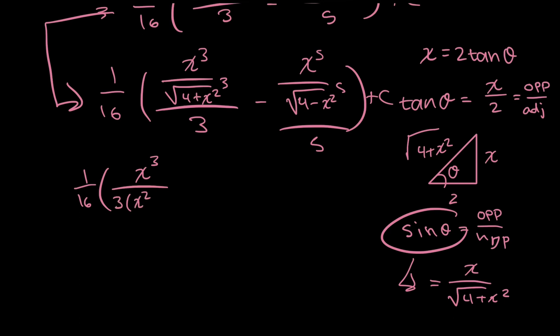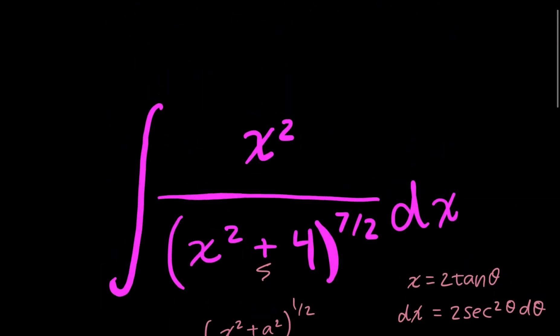It should be plus. x squared plus 4 raised to the power of 3 halves minus x to the power of 5 over 5 times x squared plus 4 to the power of 5 halves.